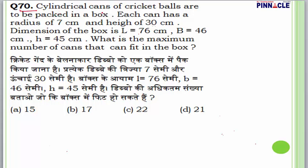Question 70: Cylindrical cans of cricket balls with radius 7 cm and height 30 cm are to be packed in a box of dimensions 76×46×45 cm. You cannot solve this by dividing volumes since the box is solid and not melted. Diameter of each can is 14 cm.